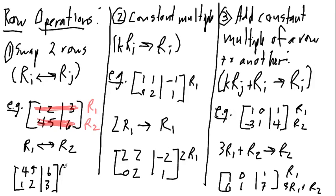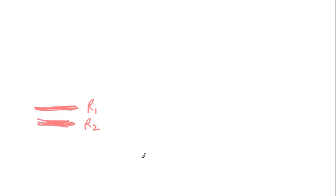I should have written over here that this is now R, 2, and that's R, 1. Great. So, these are the row operations.